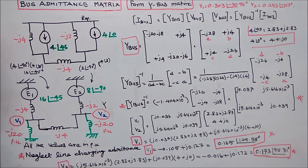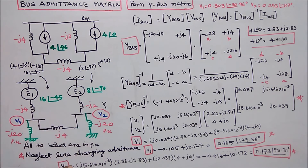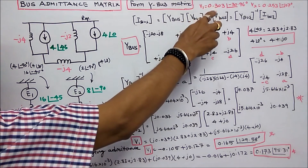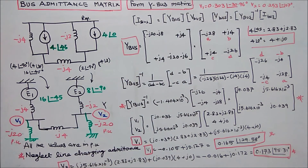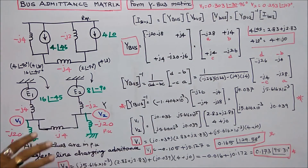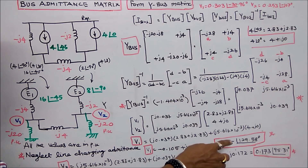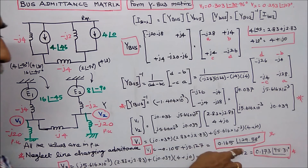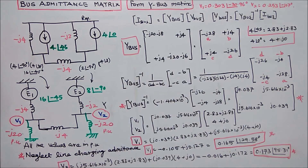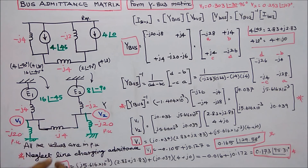Now we compare the results. In the first case with shunt capacitors (J20) at buses 1 and 2: V1 equals 0.303 angle minus 30.96 degrees and V2 equals 0.253 angle minus 107 degrees. In the second case with shunt reactors (minus J20): V1 equals 0.165 angle 129.58 degrees and V2 equals 0.173 angle 95.31 degrees. When adding shunt capacitors, the voltage magnitude is higher compared to the shunt reactor case. This is the key inference from this problem.